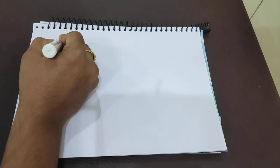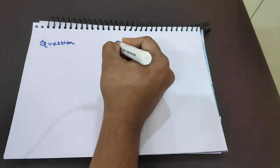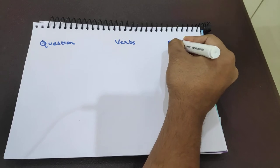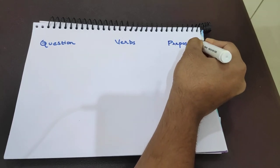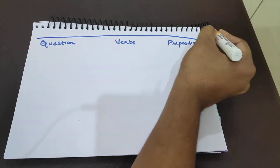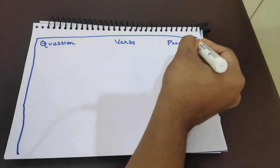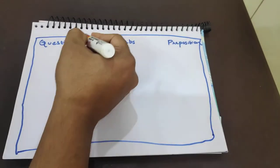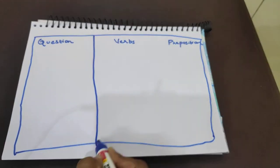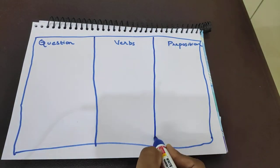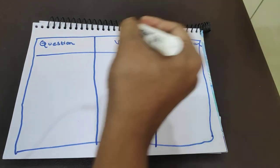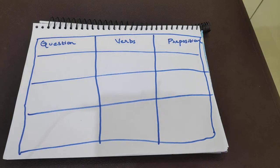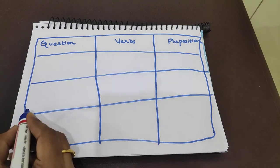So first question, then verb, then preposition. It's in a box. So two columns, nine boxes. One box, three boxes, six boxes. Three columns. Please bear with me.